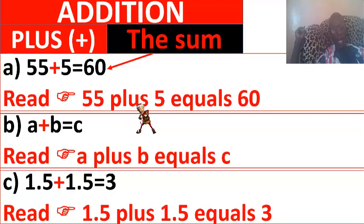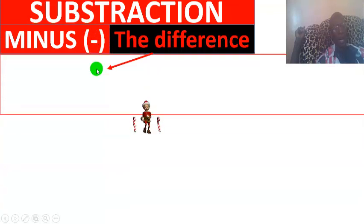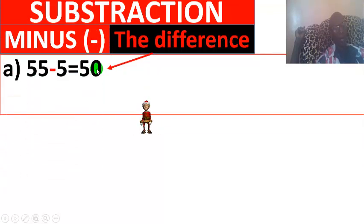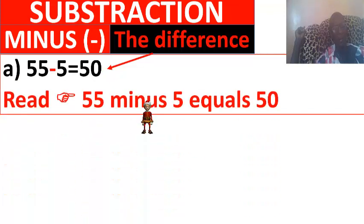The second operation is subtraction, symbolized by the minus sign. The result we find is called the difference. 55 minus 5 equals 50.